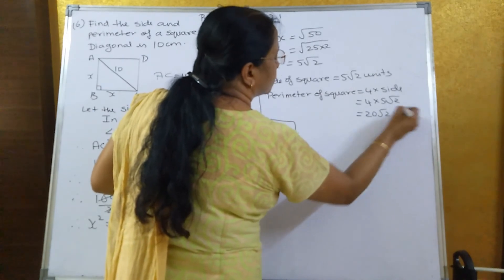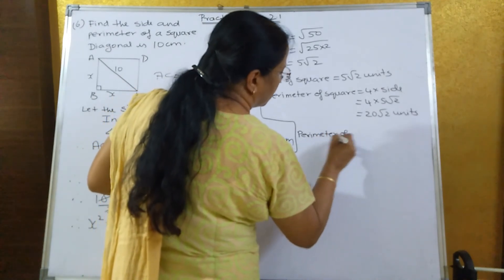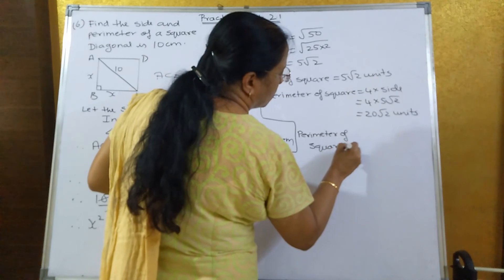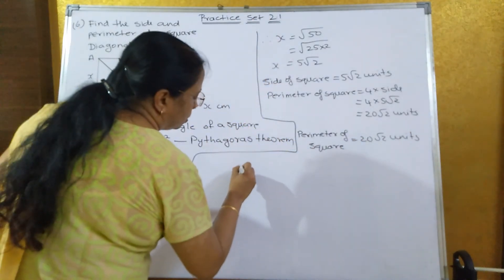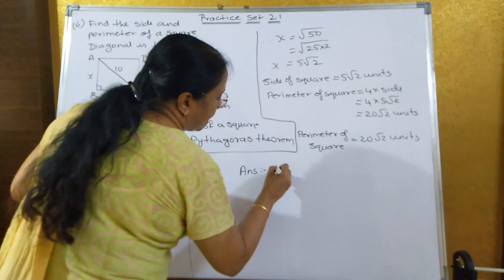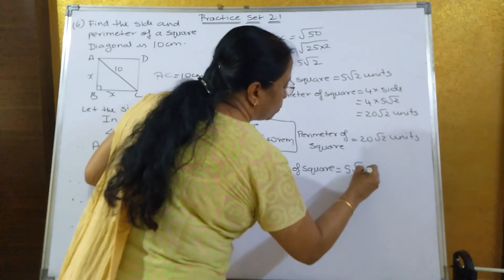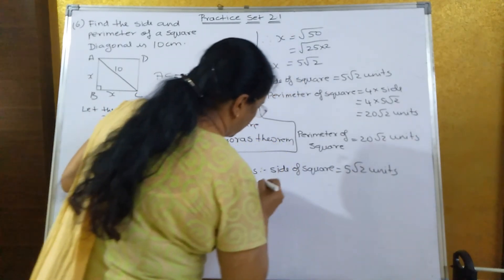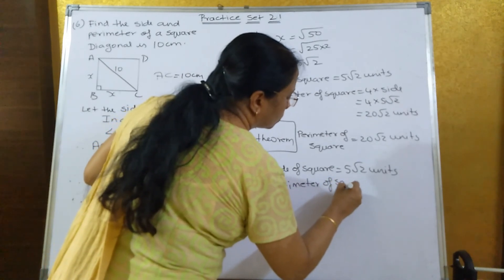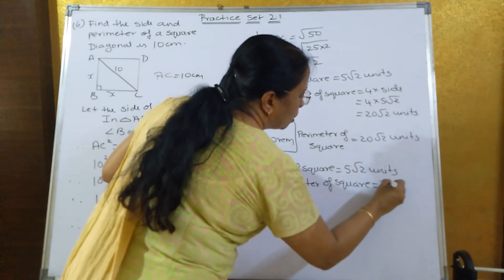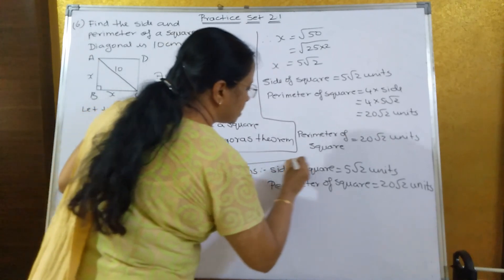So the perimeter of the square is equal to 20 root 2 units. This is the answer of this sum.